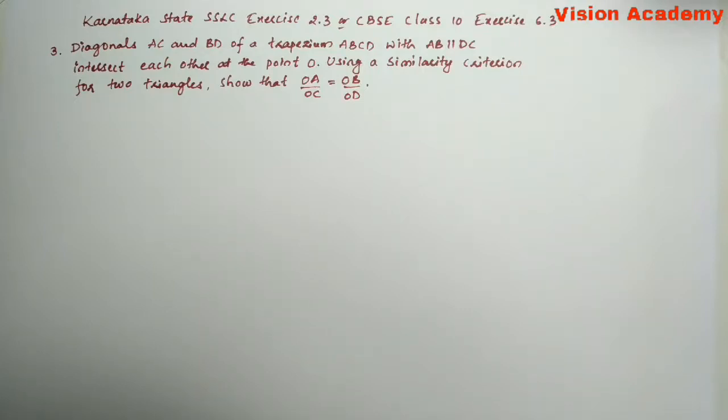In this video, we are going to solve Karnataka State SSLC Exercise 2.3 or CBSE Class 10 Exercise 6.3, Question Number 3. Diagonals AC and BD of a trapezium ABCD with AB parallel to DC intersect each other at point O. Using a similarity criterion for two triangles, show that OA by OC is equal to OB by OD.